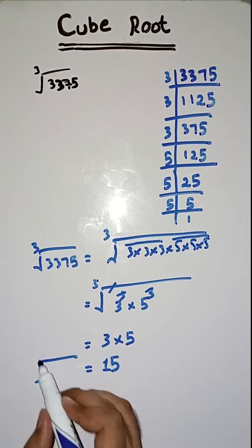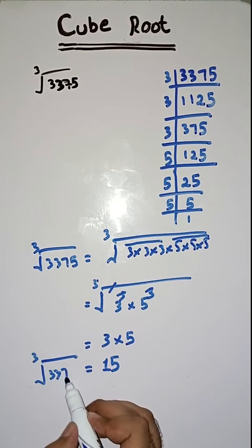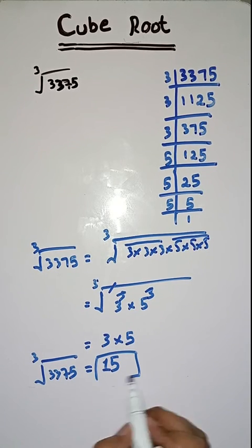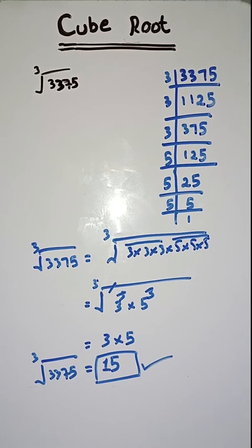So students, the cube root of 3375 is equal to 15. Hopefully you get the point. If you have any doubt, you can ask in the comment section. Please like, share and subscribe to my YouTube channel. Thank you.